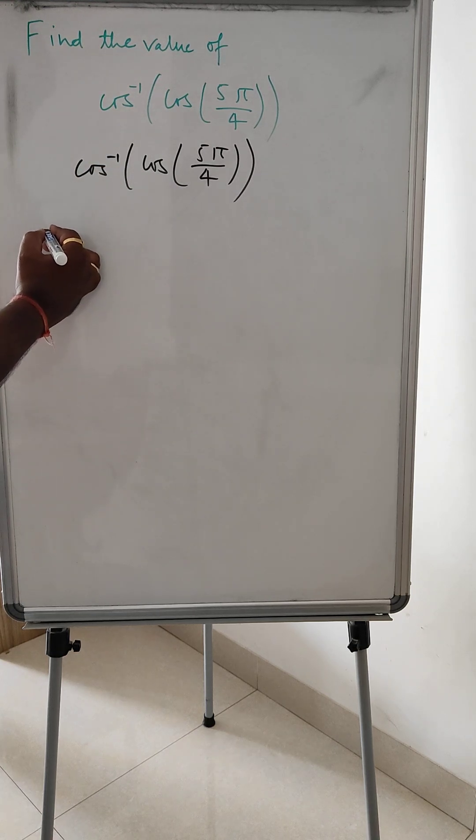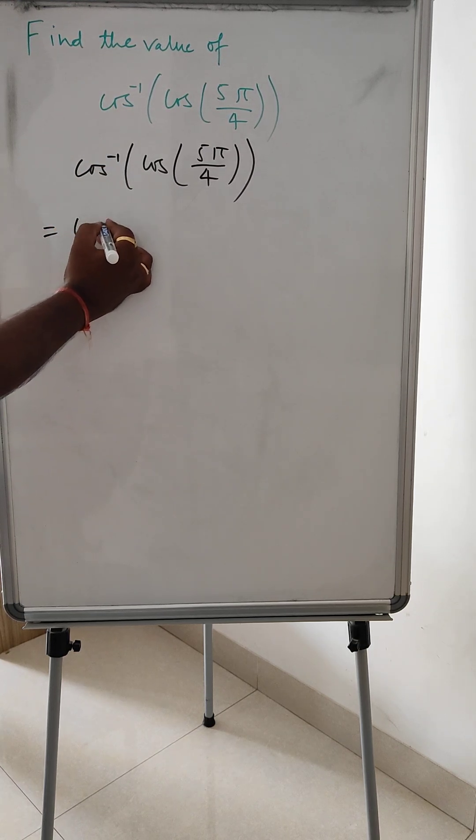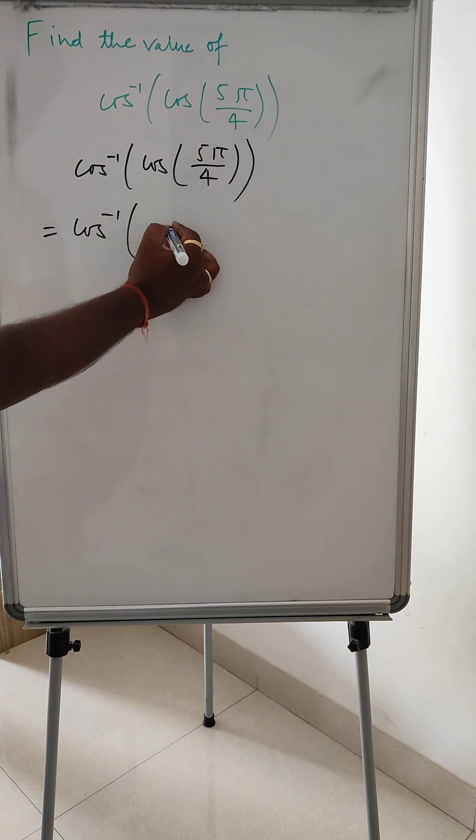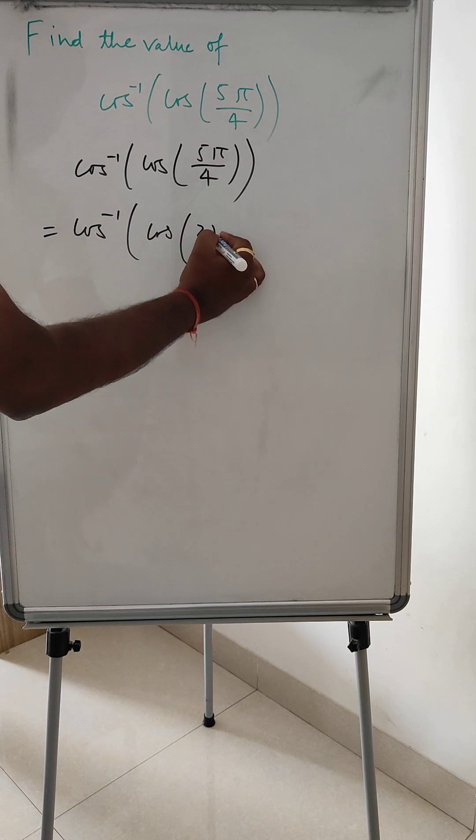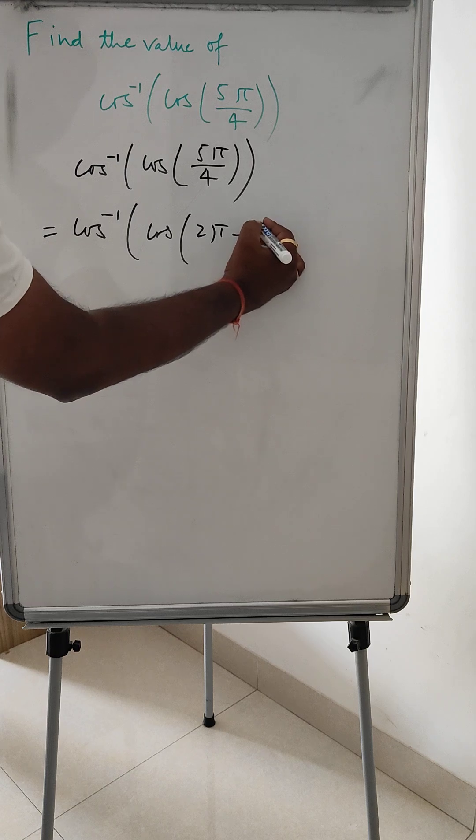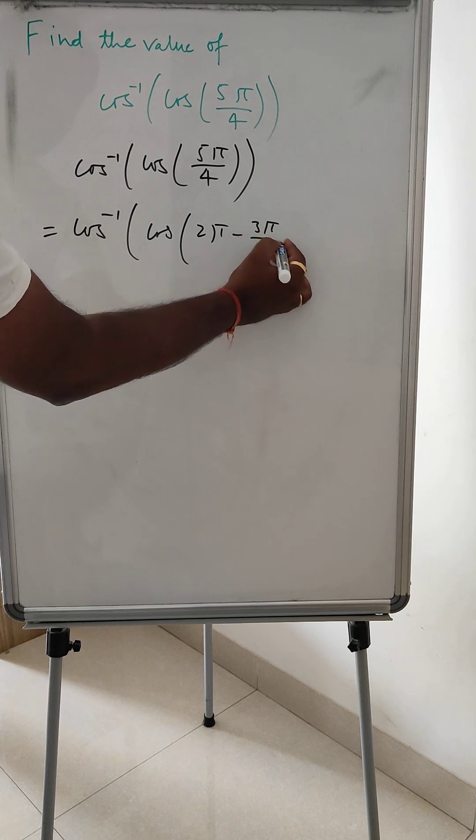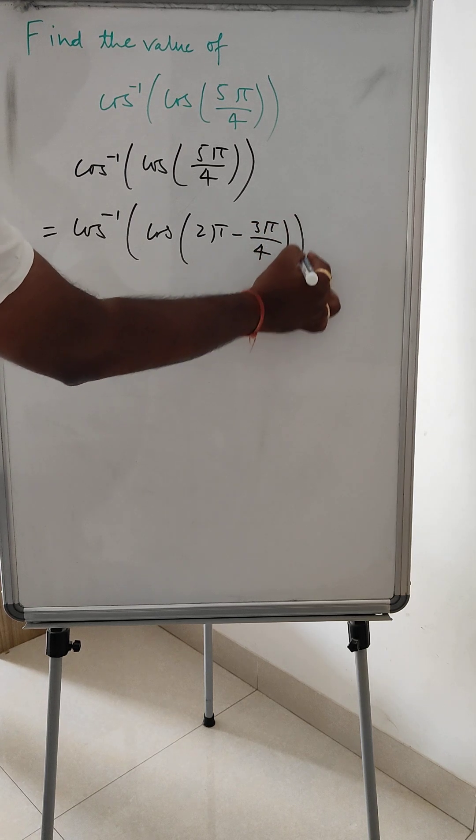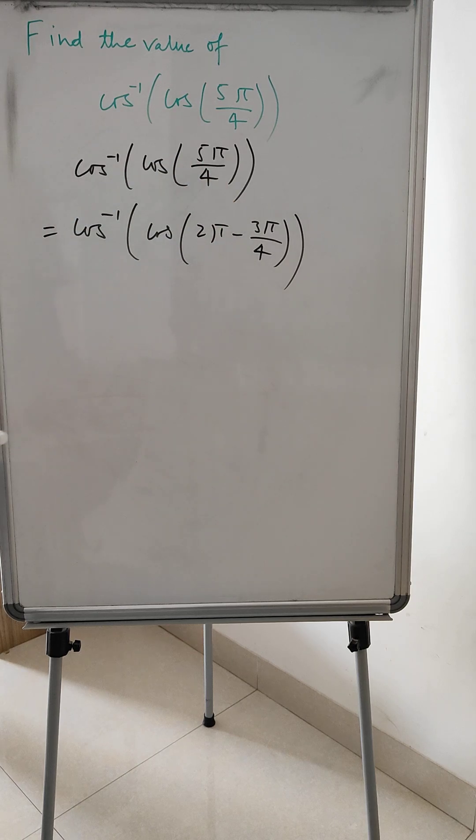We have to find the value of this. Now we can write cos inverse cos 2π minus 3π/4. We can write it like this.